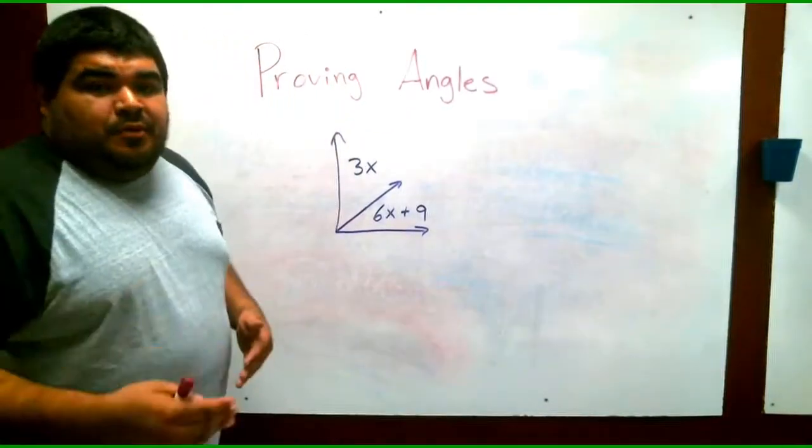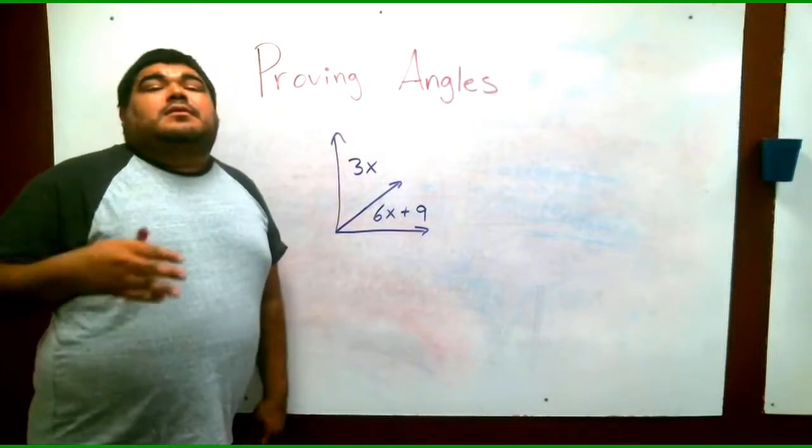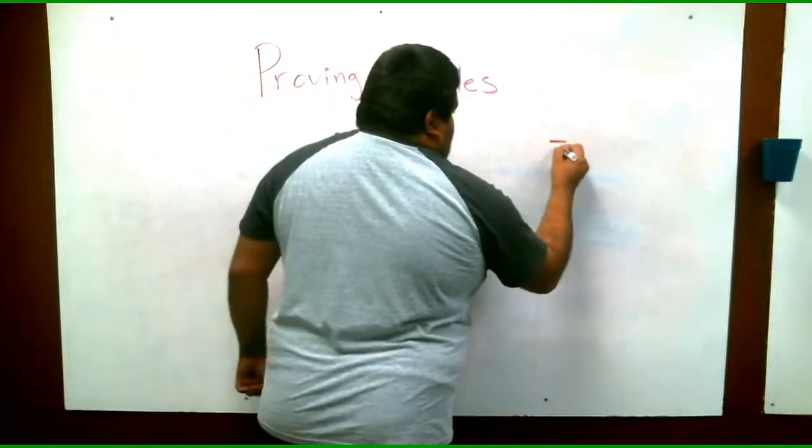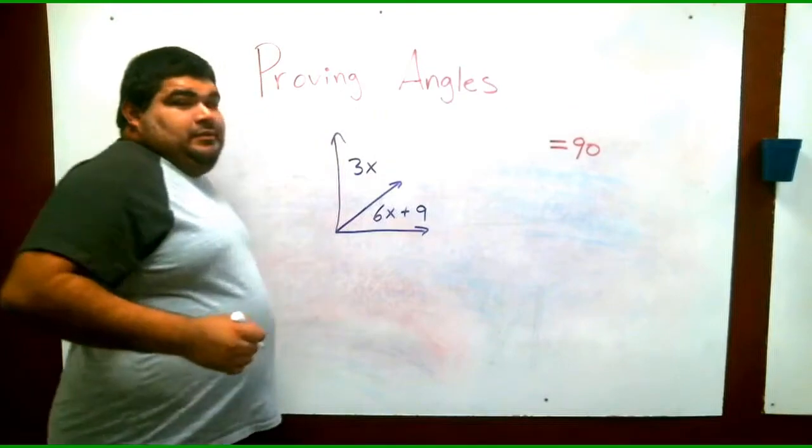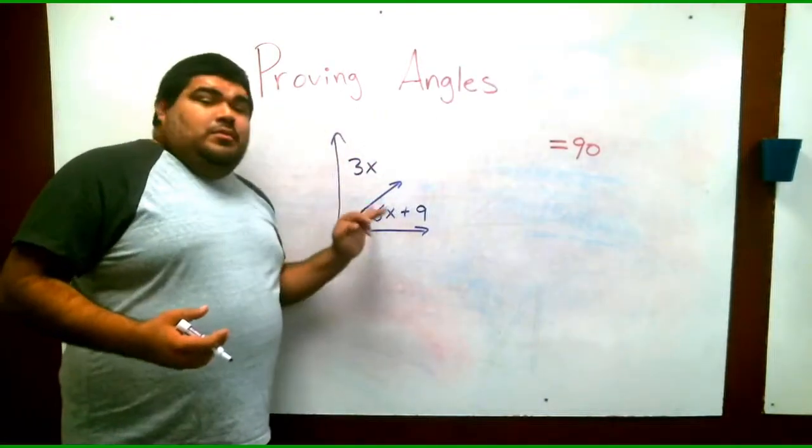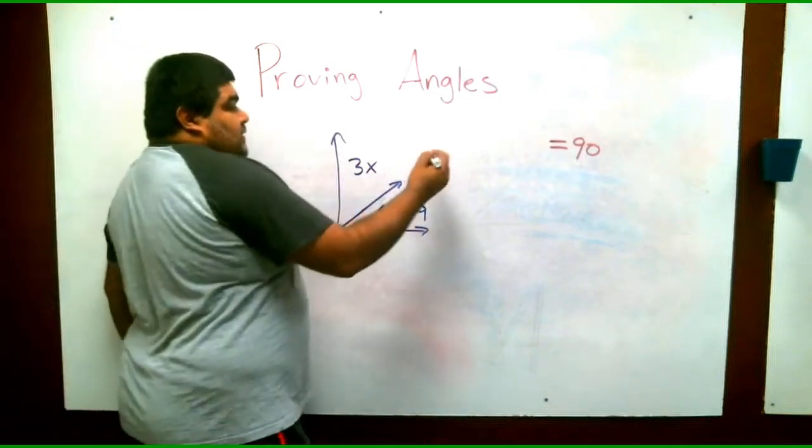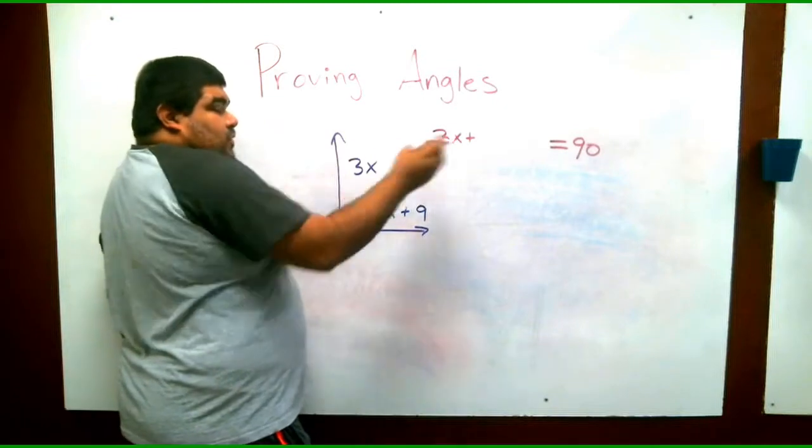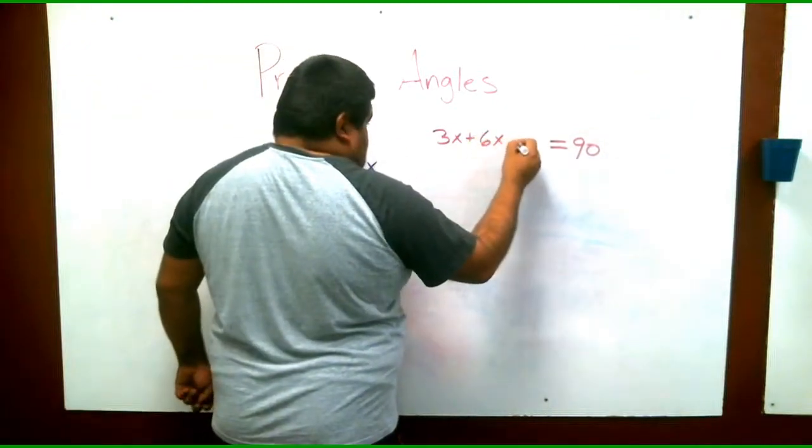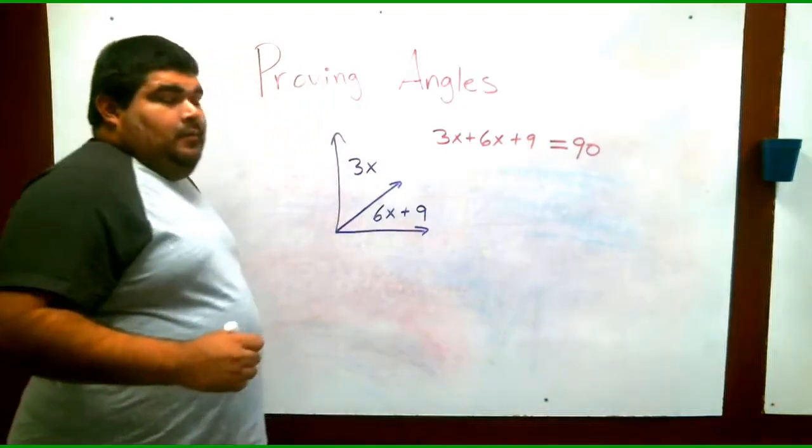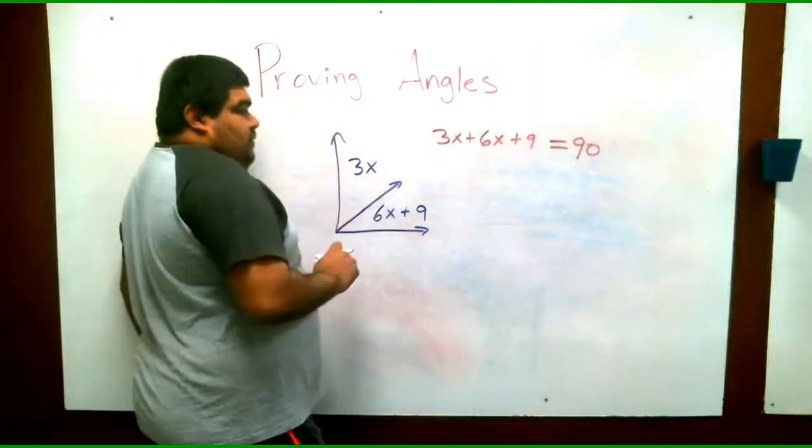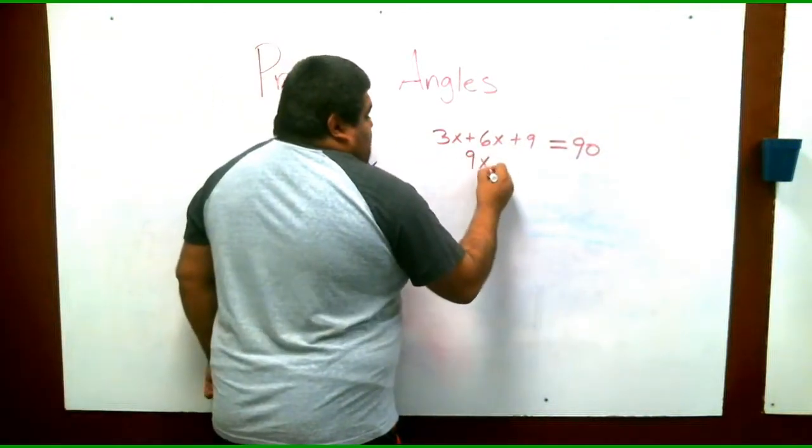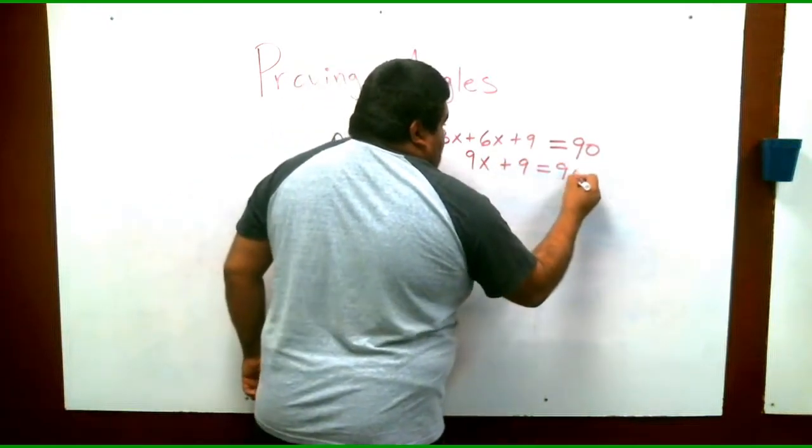All right. So here's the next example. We have a complementary, right? Complementary angles, which equals 90 degrees. So we know it equals 90 degrees. Now we have to find what each angle here equals. So we have 3x. So we have 3x plus, because remember, they're both together. You have to combine them to equal 90, 6x plus 9. Now that we have written it all together, we can combine like terms. Again, 3 plus 6, 9x plus 9 equals 90.